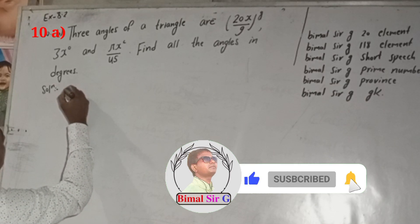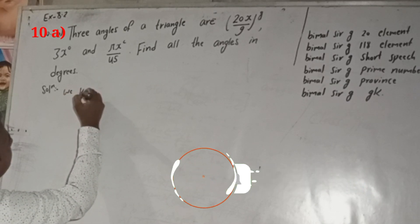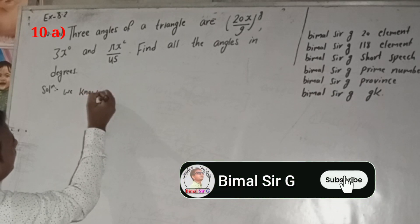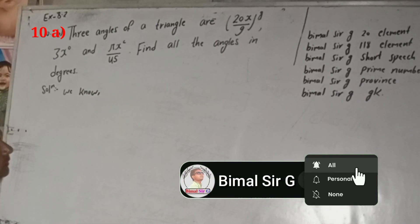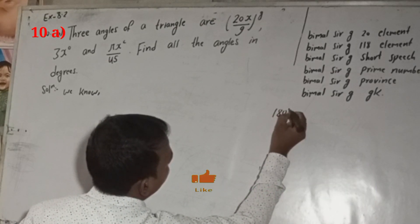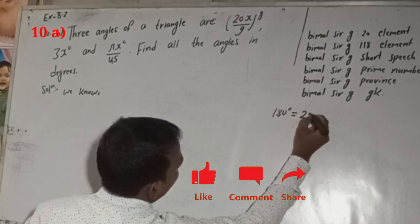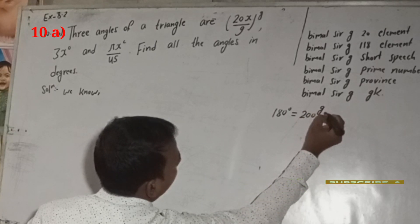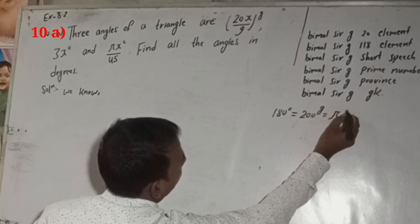So we know, grade to degree, we have to remember the relation: 180 degree is equal to 200 grade, is equal to π radian.